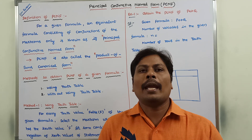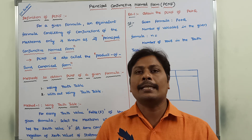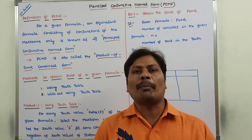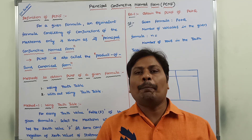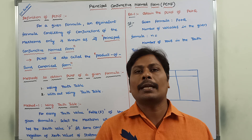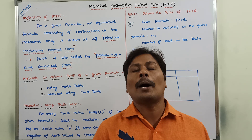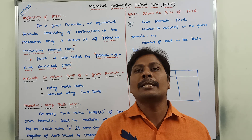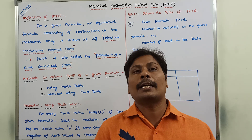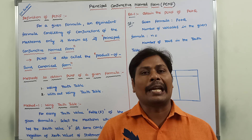Hi friends, today I am giving a lecture on PCNF, that is Principal Conjunctive Normal Form. It is one type of normal form. In the previous videos, we already discussed about three normal forms: DNF (disjunctive normal form), CNF (conjunctive normal form), and PDNF (Principal Disjunctive Normal Form) with several example problems. Please refer to those videos for better understanding of DNF, CNF, and PDNF.